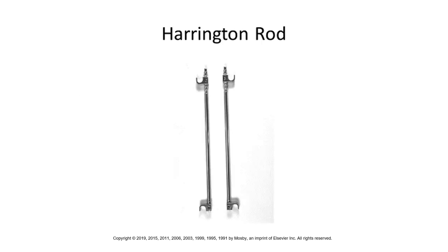A Harrington rod is used with unstable vertebral fractures. An incision is made and rods are placed down both sides of the vertebrae to provide stabilization. This is what Harrington rods look like and how they function to stabilize unstable vertebral fractures.